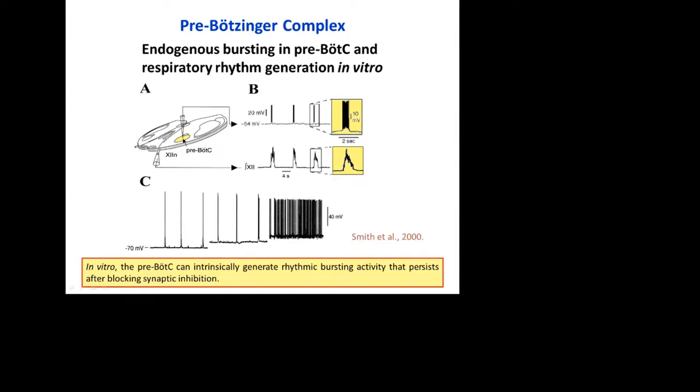It can generate rhythmic bursting even if all kinds of synaptic inhibition are pharmacologically blocked. Even further, if we completely decouple the network by blocking excitatory neurotransmission as well, we can still find cells that show rhythmic bursting provided by certain intrinsic cellular properties. So the pre-Bötzinger complex is believed to be an essential part of the respiratory CPG.